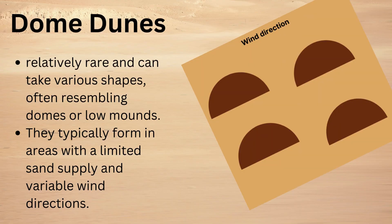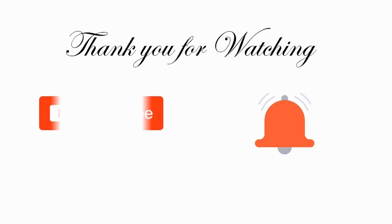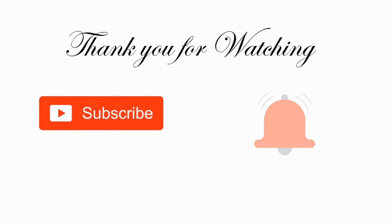And the last one is dome dunes. They are relatively rare and can take varied shapes, often resembling domes or low mounds. They typically form in areas with unlimited sand supply and variable wind direction. Here you can see the image. Don't forget to comment in the comment section the places where dome dunes exist. If you like the video, subscribe and hit the bell icon.